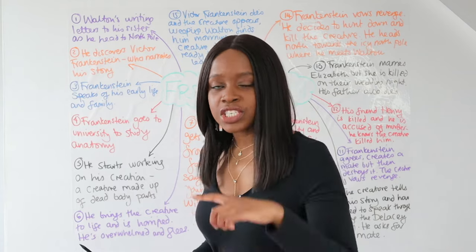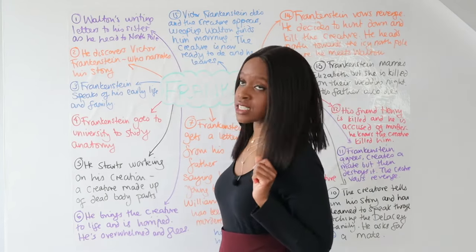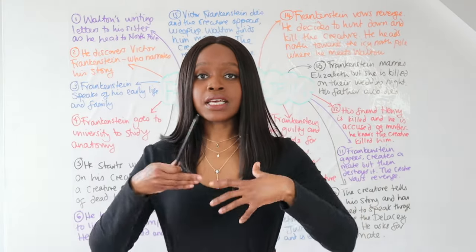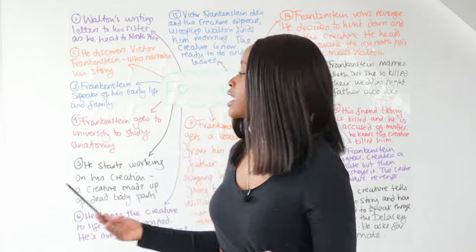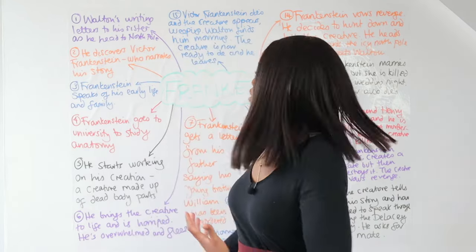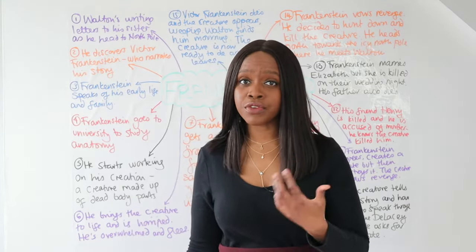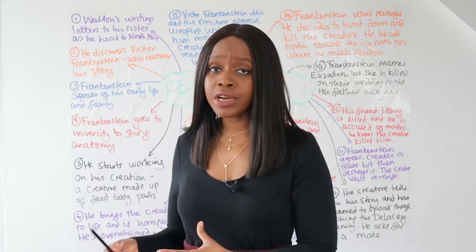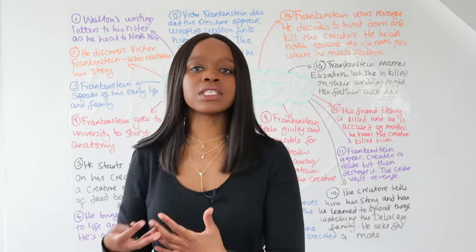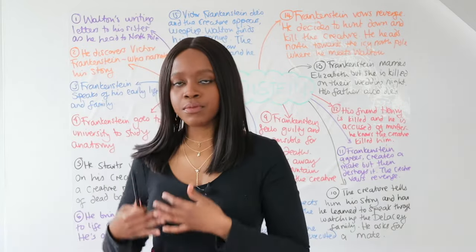The story starts with Captain Walton writing letters to his sister back in England. We learn that he's on a massive expedition and exploration mission — part of his ambition to get with his men to the North Pole. However, he gets stuck in the ice, and whilst he's stuck, he discovers a really mysterious man in this cold area who looks like he's almost very close to death. This man is lonely and isolated, by himself.